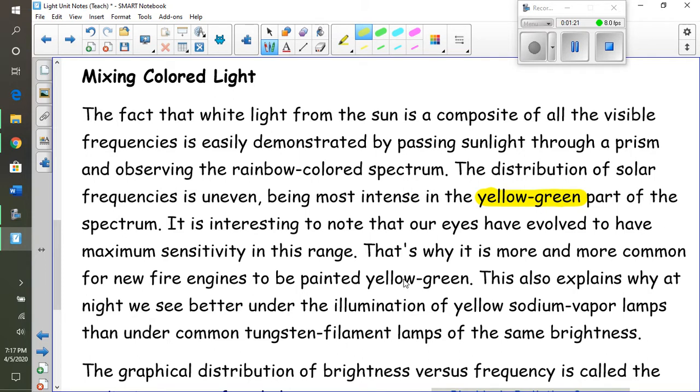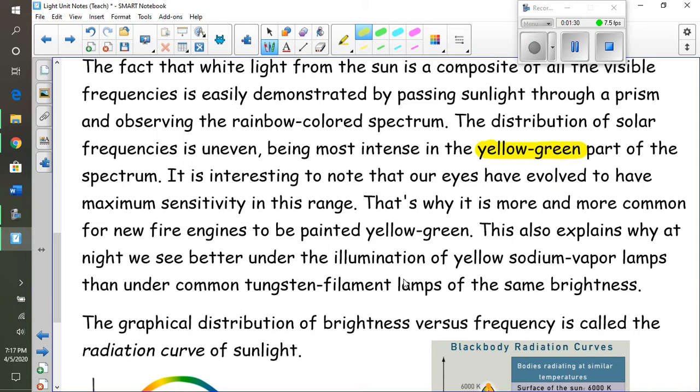So you may be familiar with fire engines being red. Well, they're starting to be painted this yellow-green color - makes them stand out more. This kind of explains why at night we see better under the illumination of a yellow sodium vapor lamp instead of common tungsten filament lamps of the same brightness.